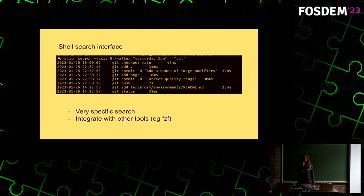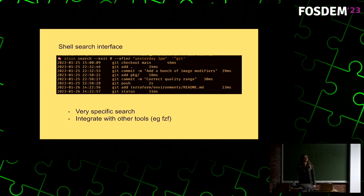A little bit more on the search: you don't have to use the search UI. We also have a command line search interface, which is useful if you have a specific command in mind — maybe you know roughly when it was or roughly what it looks like. It's also useful to integrate with other tools; someone on the Discord told me they've used this to integrate directly with FZF as their search instead. You can search for all successfully-run commands after yesterday at 3pm that start with git. The time specifier supports a human way of expressing time, and the command search supports regular expressions.